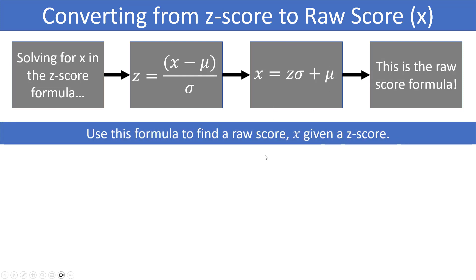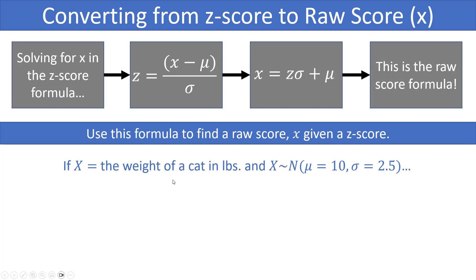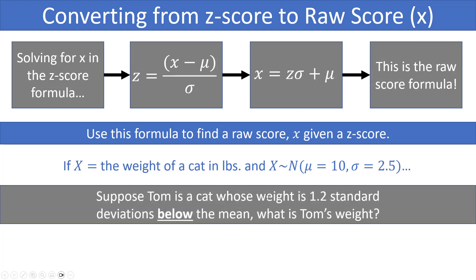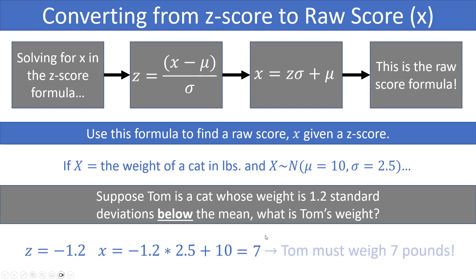This formula helps us find a raw score X given a Z score. For example, using the same cat weight distribution — N(10, 2.5) — suppose Tom is a cat whose weight is 1.2 standard deviations below the mean, so his Z score is negative 1.2. Plugging into the formula: X = (−1.2)(2.5) + 10. That gives us 7. So Tom weighs 7 pounds.